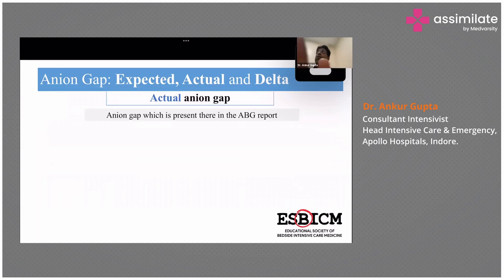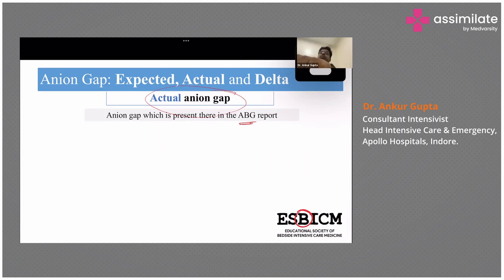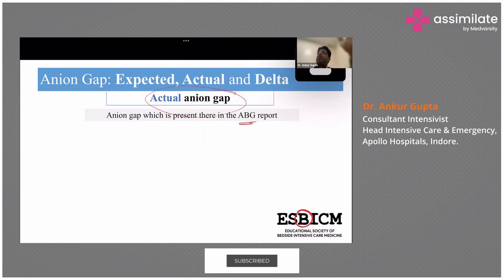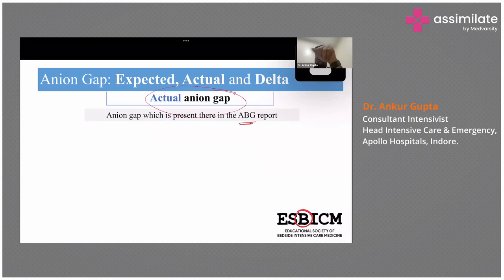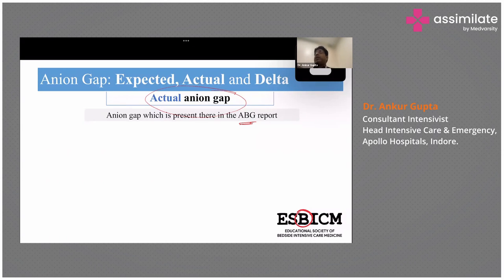We will approach how to calculate the anion gap. The anion gap shown in the ABG report is the actual anion gap — it is not accounting for the patient's specific condition. Most persons just see the anion gap in the blood gas report, which is always the actual anion gap. The same way we did for oxygen — comparing the reported PO2 with what was expected — we have to do the same for anion gap: compare the actual anion gap in the ABG report with what is expected for this particular patient.